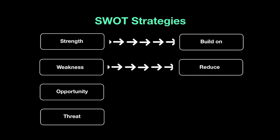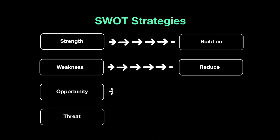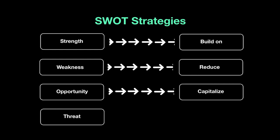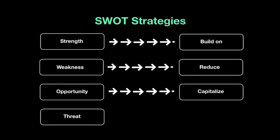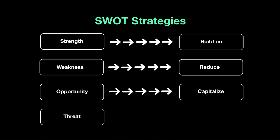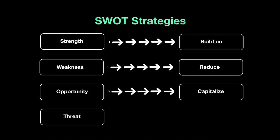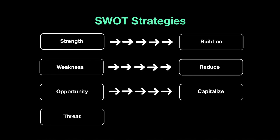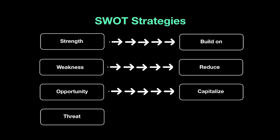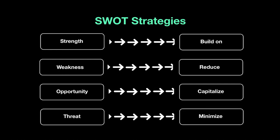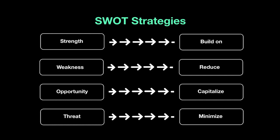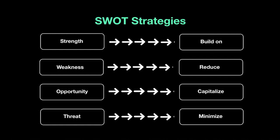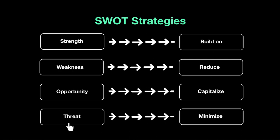With the opportunities — for example, the growing demand for bottled water — you need to capitalize on them. With bigger production units all over the world making bottled water, Coca-Cola is on the right track. And with threats like growing competition from beverages like Monster and Red Bull entering the market, you need to minimize them as much as possible — perhaps by focusing more on your strengths. These are the strategies you build based on a SWOT analysis.